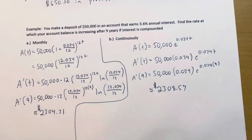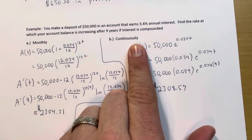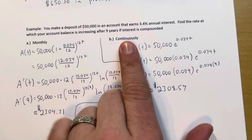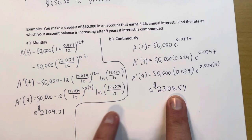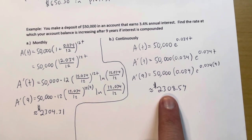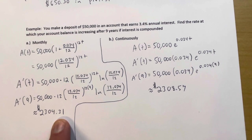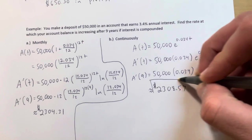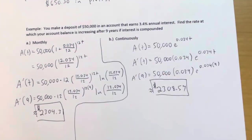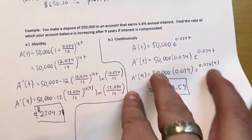Notice the amount of interest accumulated when compounded continuously is more than monthly, which we'd expect — but only about $4 more. This is consistent with what we saw early in the course, where the improvement from more frequent compounding got pretty small in the long run, even though it was still there.